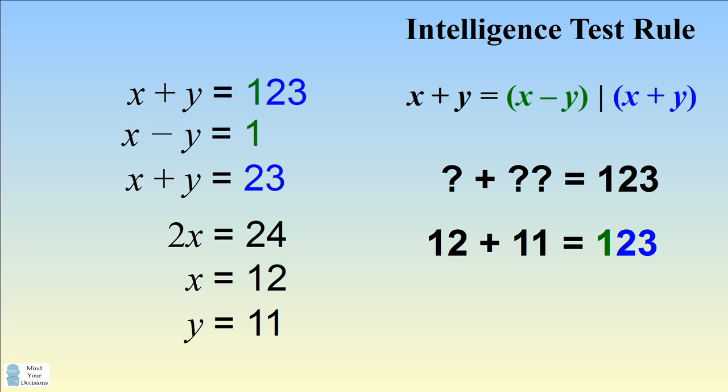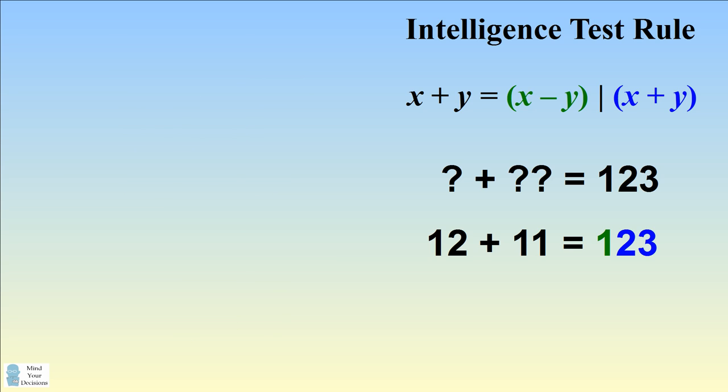But if we were to truly have an intelligence test, we need to look for all solutions. There's another way we can interpret our problem. We could have two numbers combined so that they have a difference of 12 and a sum of 3.